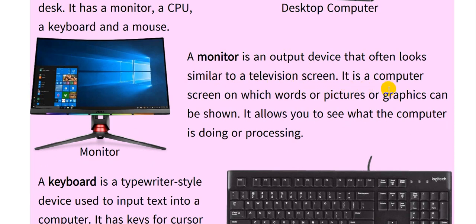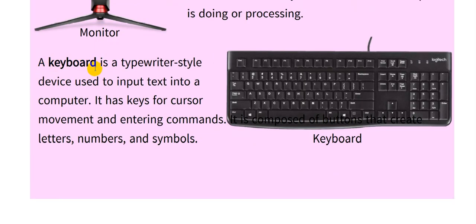It is a computer screen on which words, pictures, or graphics can be shown. It allows you to see what the computer is doing or processing. A keyboard is a typewriter-style device used to input text into a computer. It has keys for cursor movement and entering commands, letters, numbers and symbols.